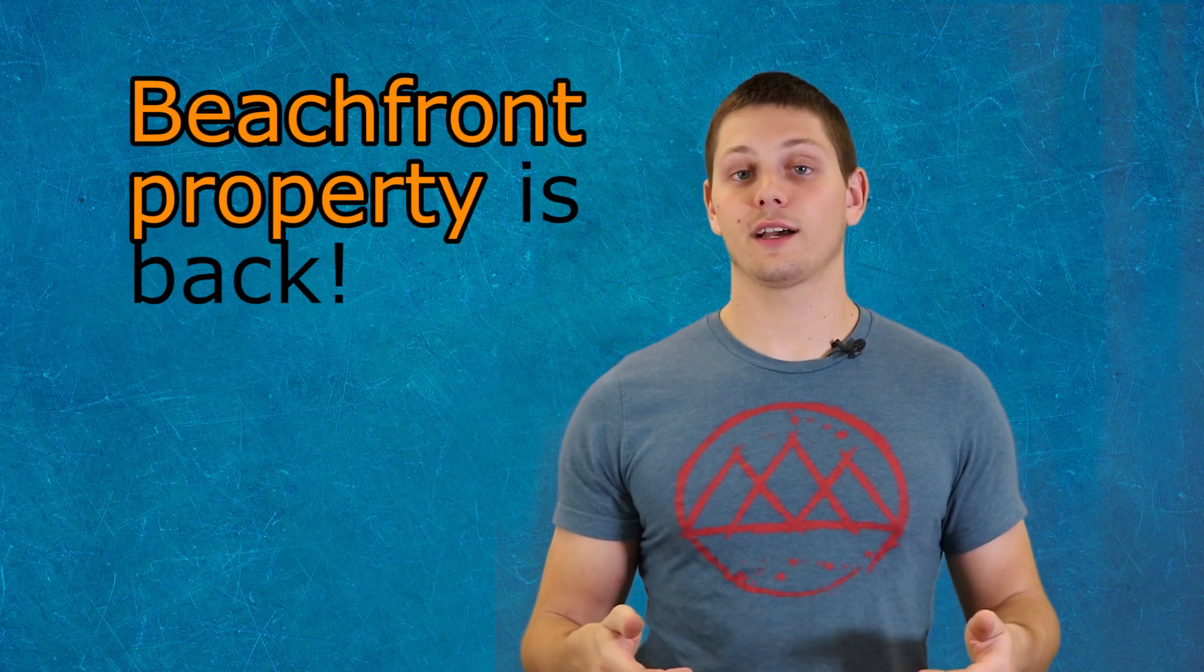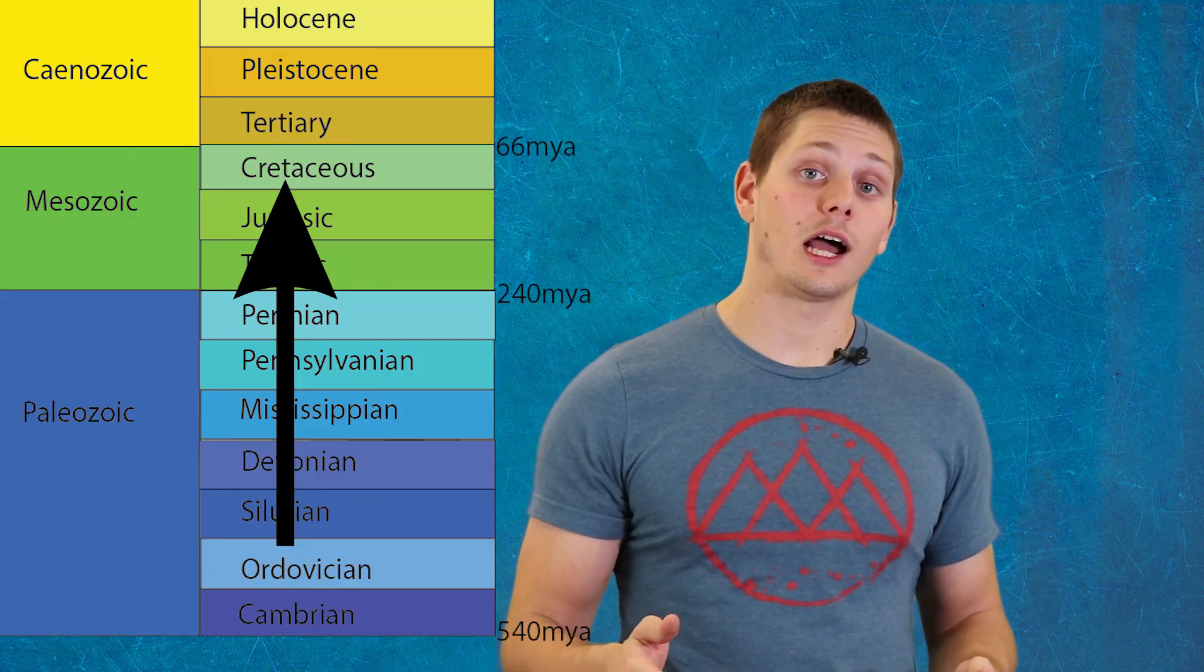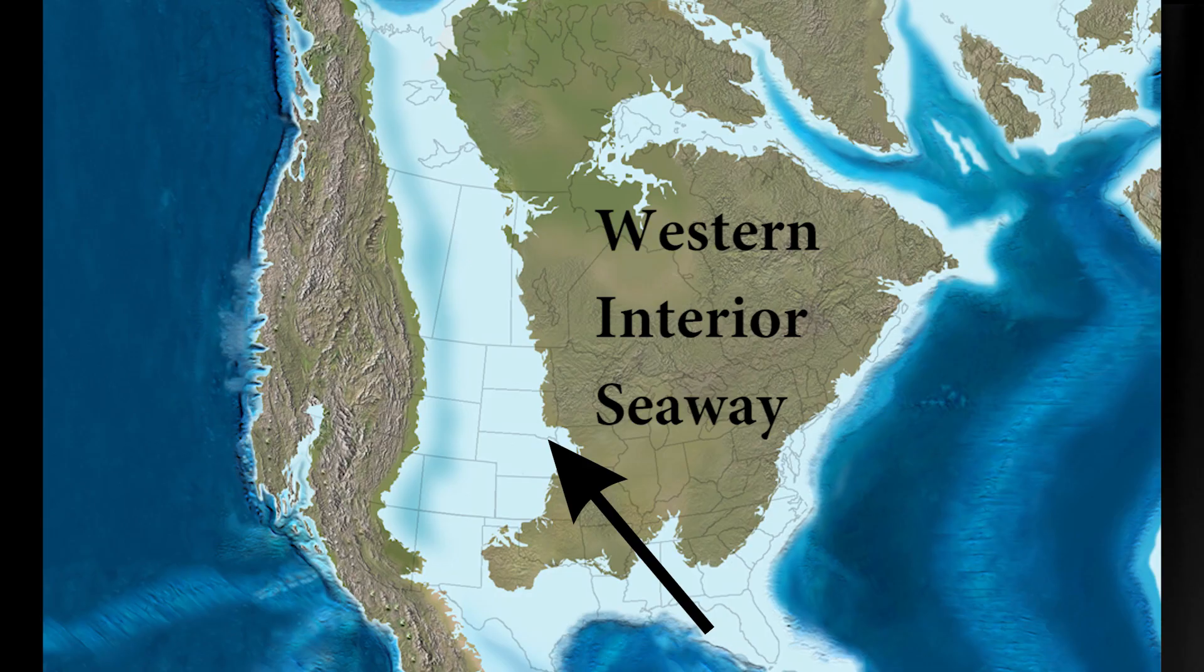Once uplift in Arkansas ended, the seas returned and rose faster. This was late Cretaceous time, a time when the Metroplex was drowned beneath a broad, deep sea. In fact, sea level rose so much that a broad seaway covered the entire middle of the United States, known as the Western Interior Seaway.